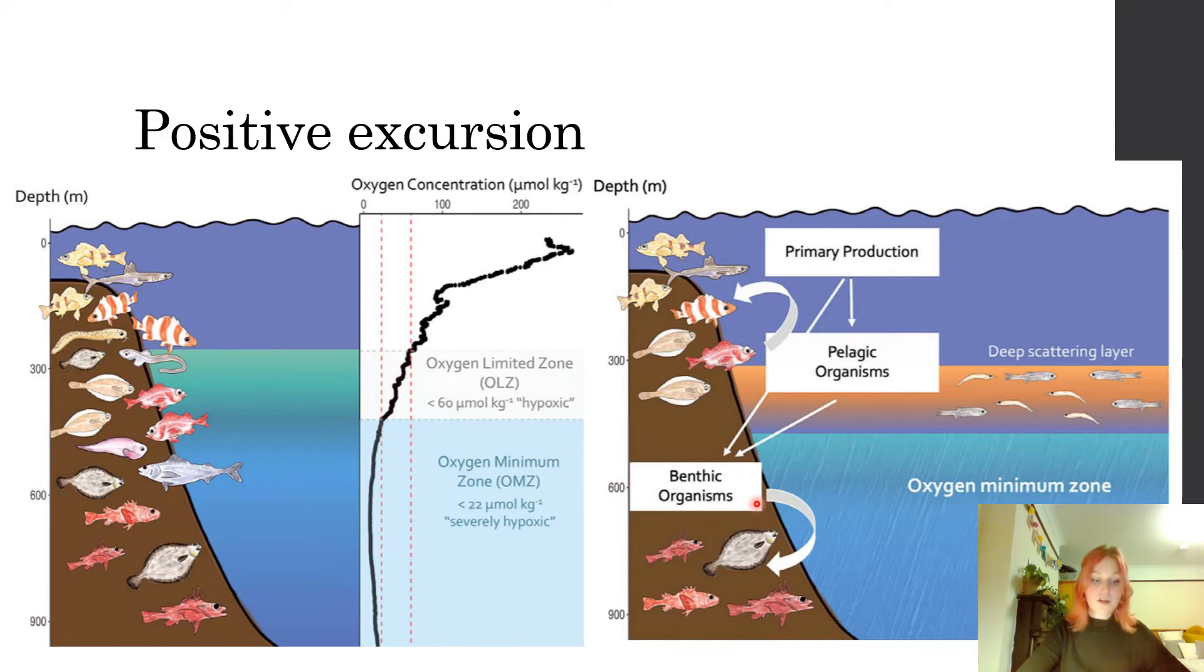The excursion is positive because photosynthesis prefers the lighter carbon 12 to carbon 13. As there is a lot of photosynthesis to create the algal bloom, the surrounding oceans then become more carbon 13 enriched. This is recorded within the sediment as a positive excursion.